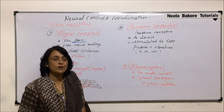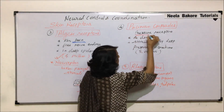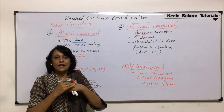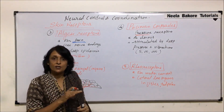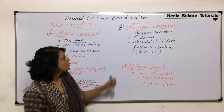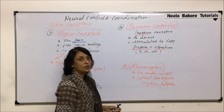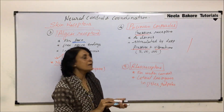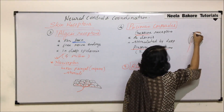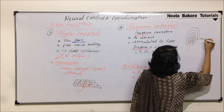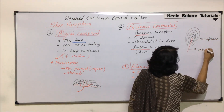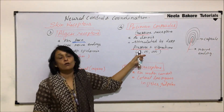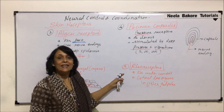The next receptors are called Pacinian corpuscles and they are specifically pressure receptors, stimulated by deep pressure or vibrations. Simple touch is detected by tangoreceptors, but pressing hard — touch with force — is called pressure, and that stimulates Pacinian corpuscles. These also have a nerve fiber encapsulated by many layers of connective tissue sheath, forming a capsule around the nerve ending. Their number is also large — about 5 lakh in our skin.